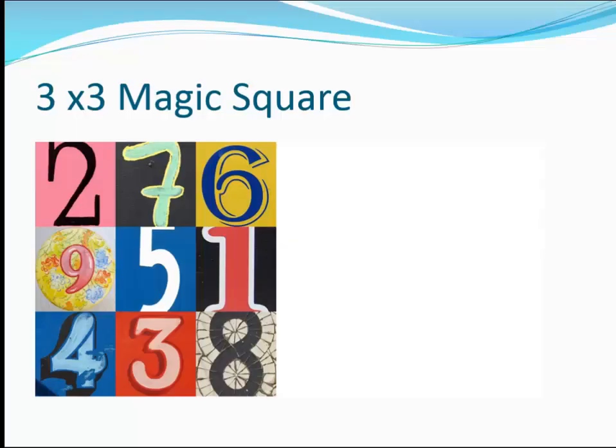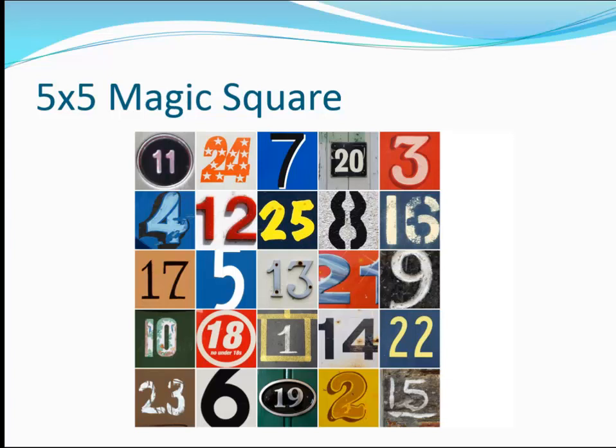Magic squares and Sudoku puzzles are concerned with ordered arrangements of numbers, particularly whole numbers which are called integers. Magic squares arrange consecutive integers into a square matrix. The sum of the numbers in each row, each column, and sometimes each diagonal is the same. The sum is called the magic sum or the magic number.